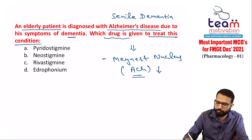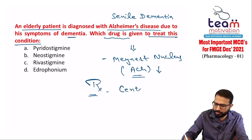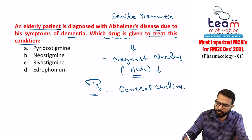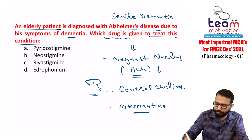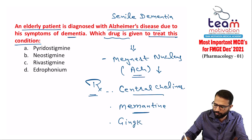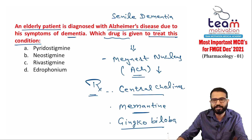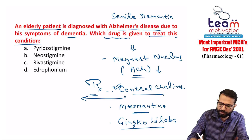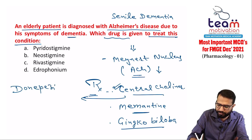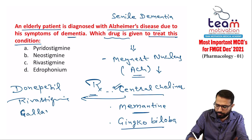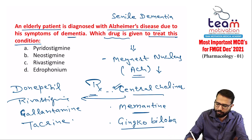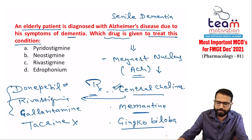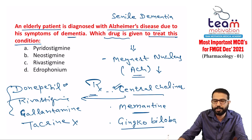Management requires central cholinergic drugs. We can also use NMDA blockers like memantine. Additionally, natural products like ginkgo biloba can be used. The overall best drugs are central cholinergics — donepezil, rivastigmine, and galantamine. Overall most preferred is donepezil because of its longer action and less risk of hepatotoxicity.